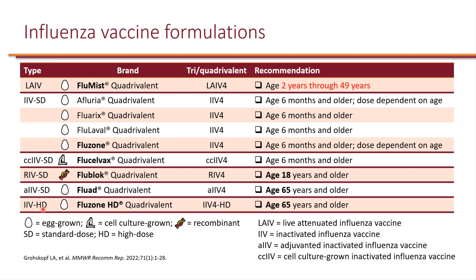Instead of the standard 15 microgram, the high dose is 60 microgram. The recombinant influenza vaccine also has a higher dose compared to standard inactivated — 45 microgram — but still less than the high dose of 60 microgram. These three formulations at the bottom will have higher efficacy in the elderly.